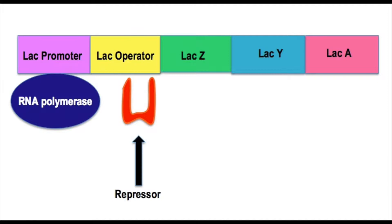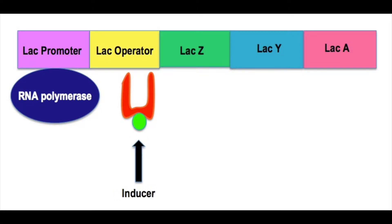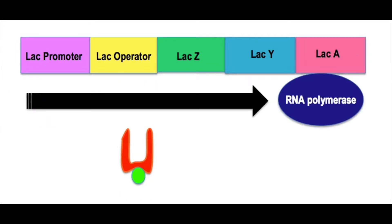In the lactose operon, the binding of RNA polymerase is blocked because a repressor protein is bound to the operator. When an inducer binds to the repressor, it becomes inactivated, meaning the repressor no longer binds to the operator, allowing RNA polymerase to proceed with transcription. In the lac operon, the inducer that binds to the lactose repressor is called allolactose.